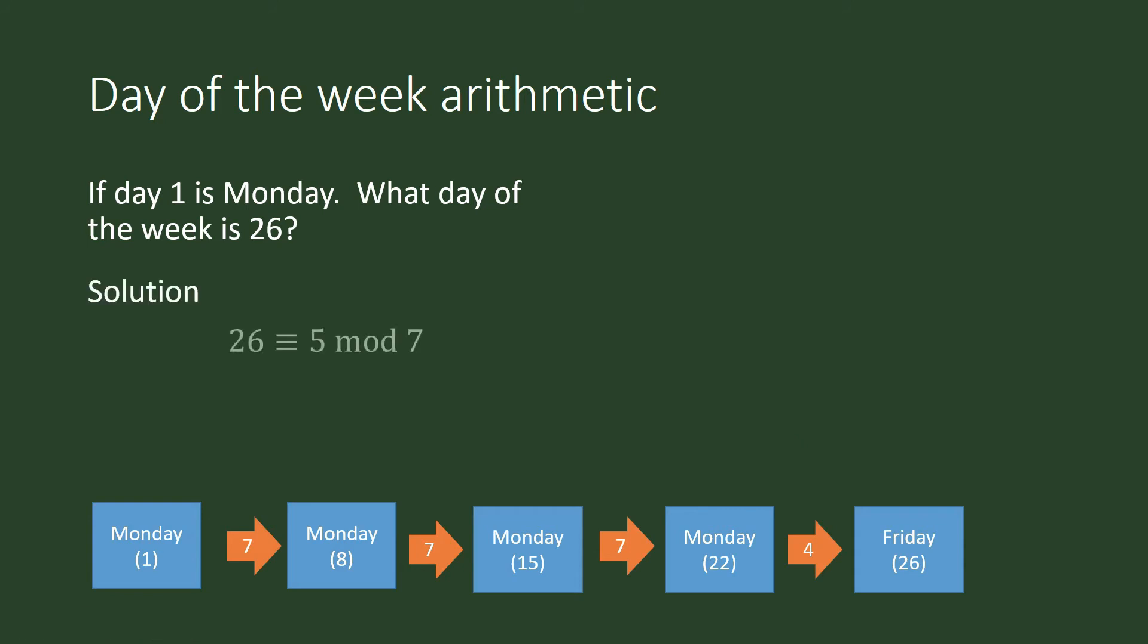But we don't have to do it that way. We can do it using modulo n arithmetic. 26 is congruent to 5 modulo 7. Because 26 divided by 7 is equal to 3, and we have a remainder of 5. This is our remainder. And we understand 5 to mean day 5 of the week. And day 5 of the week is a Friday. So the 26th day, if 1 is a Monday, is Friday.